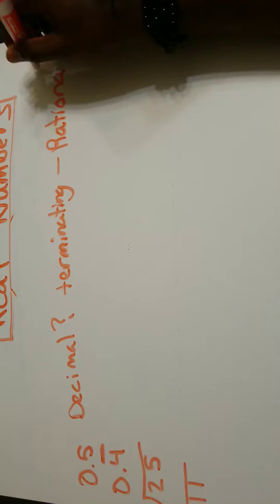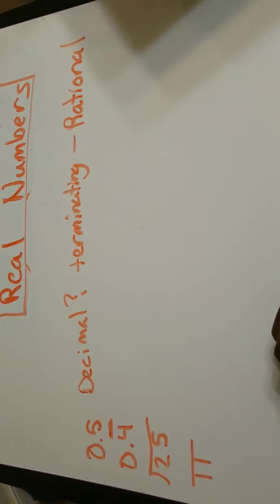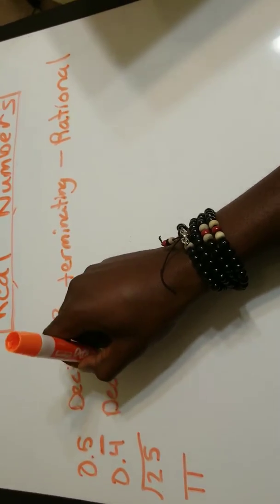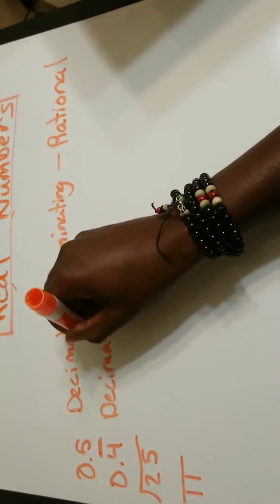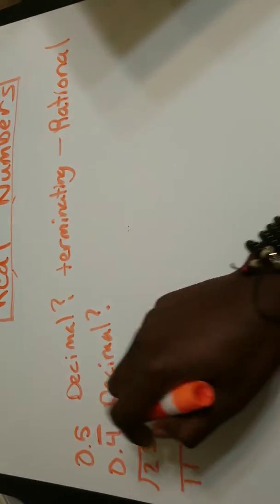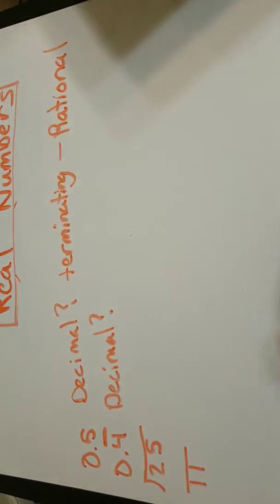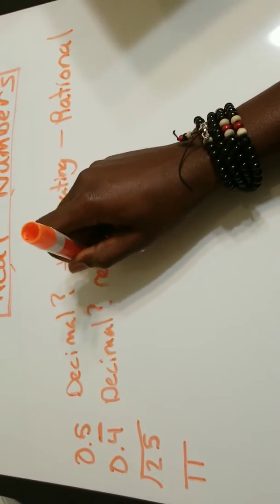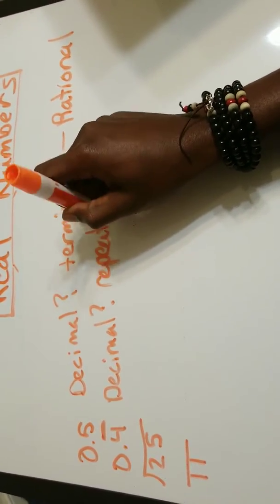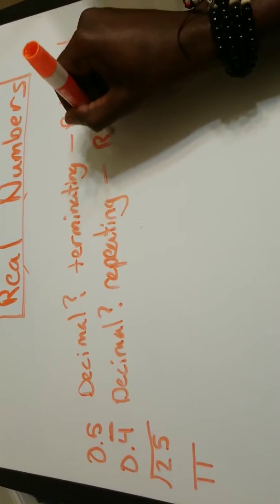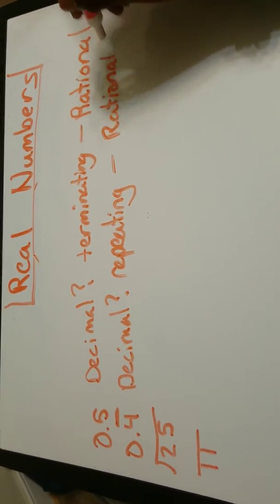Okay, let's look at number 2. 0.444 with a bar. So we see that we have a decimal. Now, is this decimal terminating or repeating? Oh, we have a bar. That's a great indicator. Repeating. And the fact that it's repeating, this would also be a rational number.